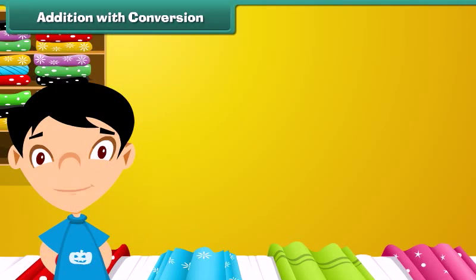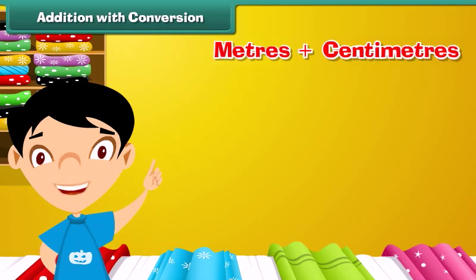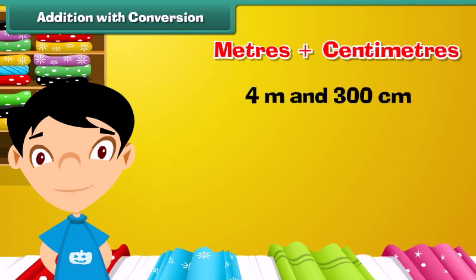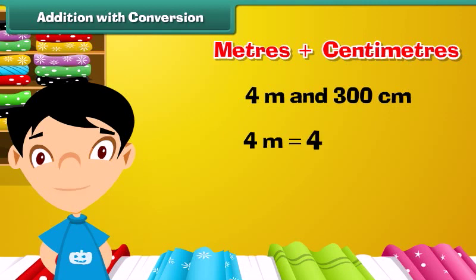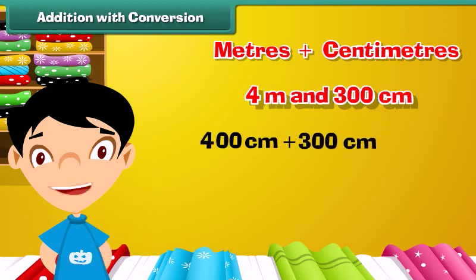Addition with conversion: Now that we know how to convert meters into centimeters, let us learn to add meters and centimeters. Let us add 4 meters and 300 centimeters. First, convert meters into centimeters: 4 meters is equal to 4 into 100, which equals 400 centimeters. Therefore, 4 meters plus 300 centimeters equals 400 centimeters plus 300 centimeters, which equals 700 centimeters.